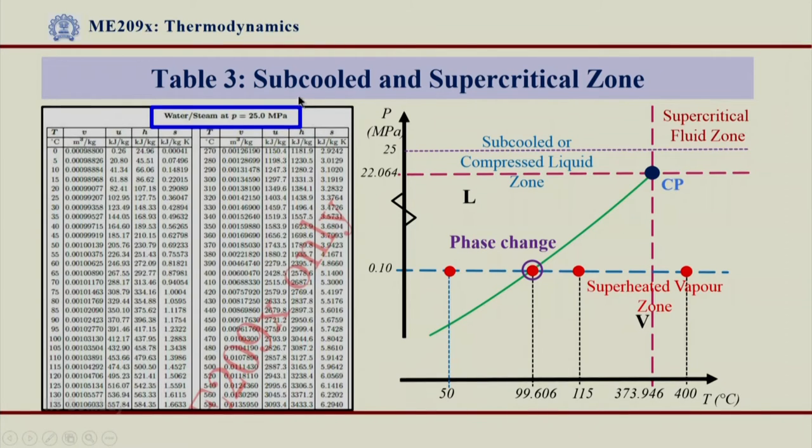But the moment you see that in the table 3 nothing is given in the bracket, you should be sure that this pressure is beyond the critical pressure. Obviously we know that 22 MPa is the critical pressure for water.